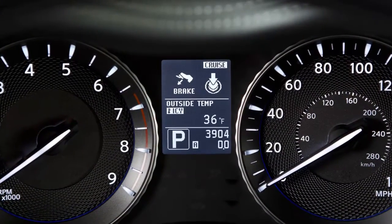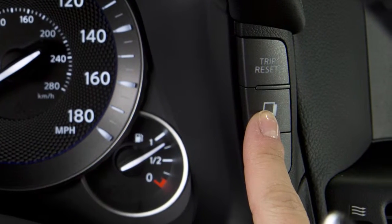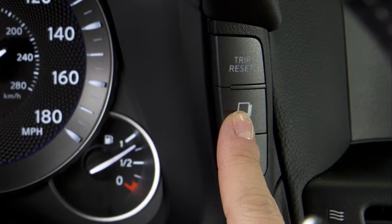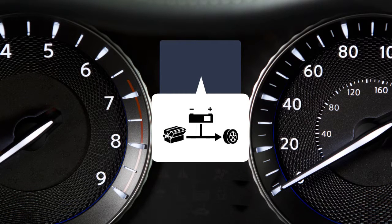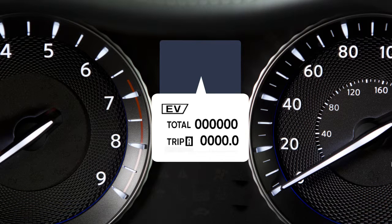One of the vehicle information display modes is the trip computer. When this button is pressed, the following modes will appear on the vehicle information display. Energy monitor displays the energy flow related to the hybrid system. Lithium-ion battery state of charge and acceleration guide shows the remaining charge in the lithium-ion battery. EV mode odometer and twin trip odometer indicates the total distance traveled using the electric motor only.